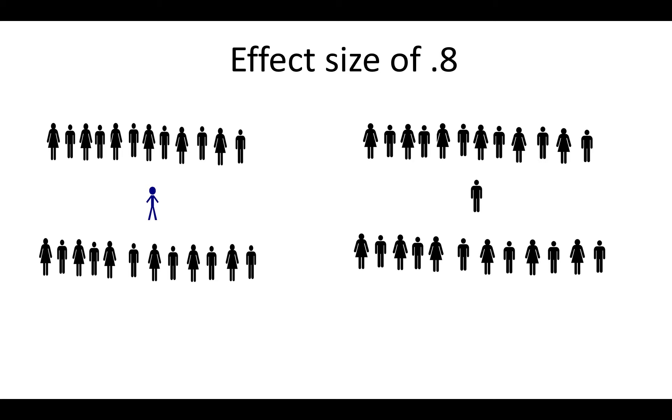An effect of 0.8 would mean that John, if he were transferred to the class that did not get the intervention, would be 6th. An effect size of 1.6 is even greater. He would now place 1st in the class that did not receive the intervention.